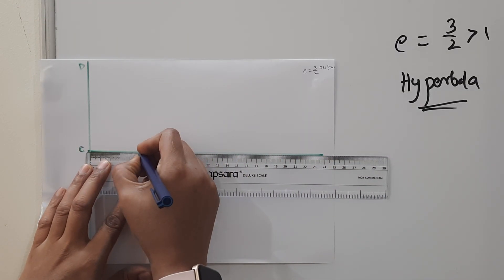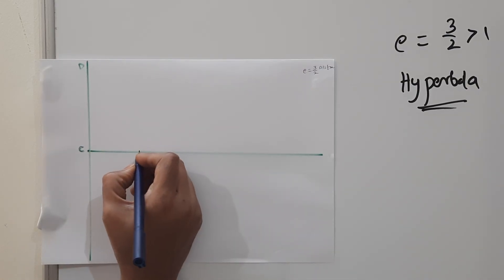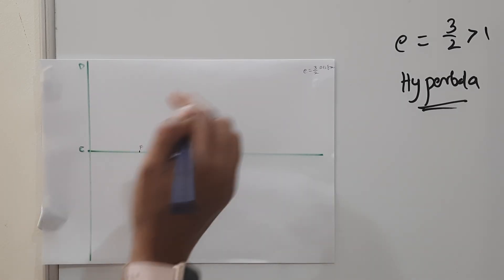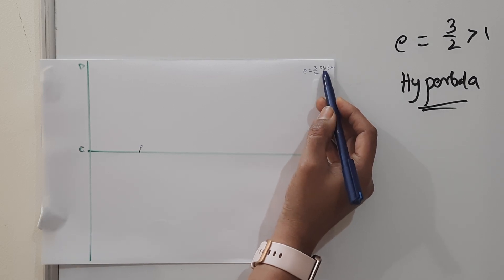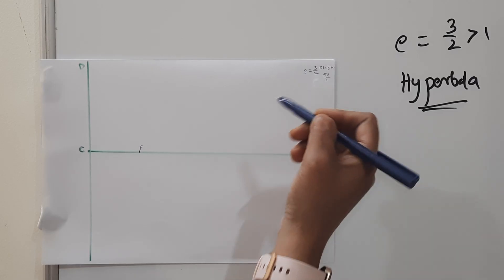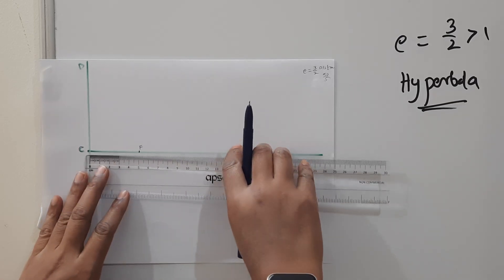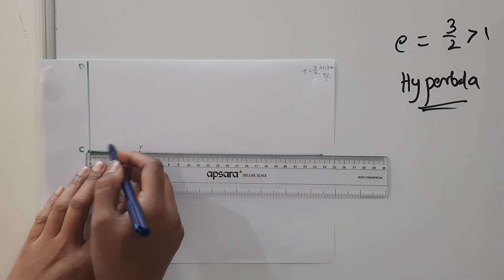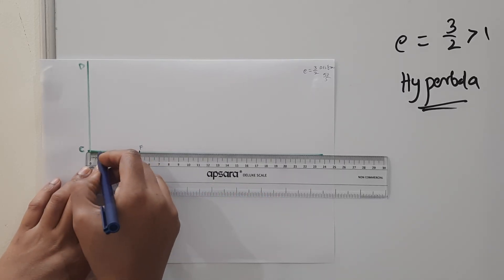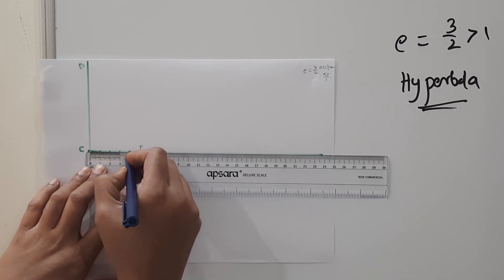You need 50 mm total. Since eccentricity is 3 by 2, that means 3 plus 2 equals 5 equal parts. So 50 divided by 5 gives 10 mm per part — you need 5 equal parts, each 1 centimeter. Count them: 1, 2, 3, 4, 5. Here we have 5 parts and here we place the focus.